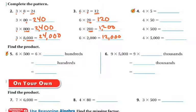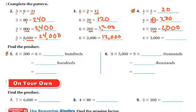Let's do the next one. This one might be tricky because in our base fact we have a 0. 4 times 5 is 20, so my base fact is 20. 4 times 50 — 20 plus one 0 — is 200. 4 times 500 — two 0s — is 2,000. 4 times 5,000 — three 0s — is 20,000.